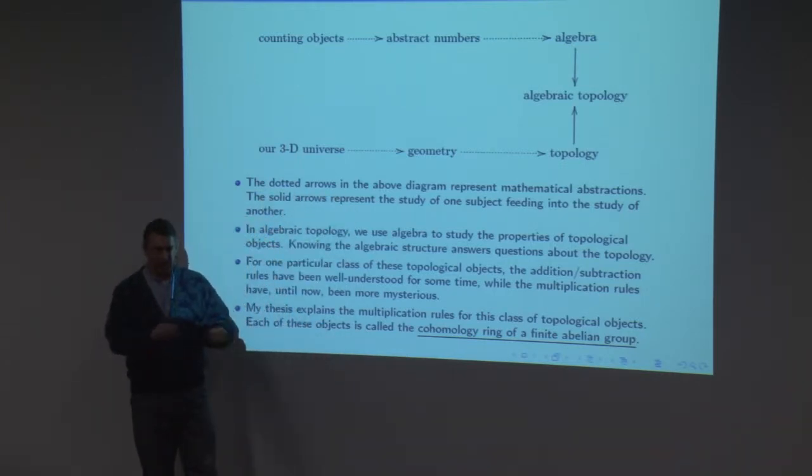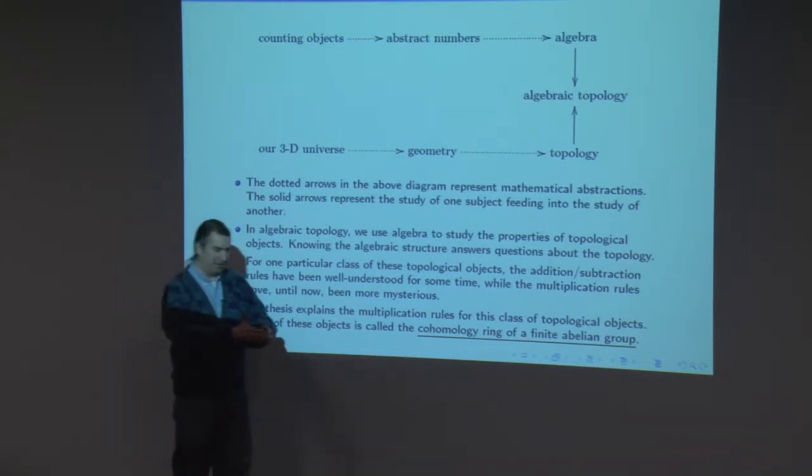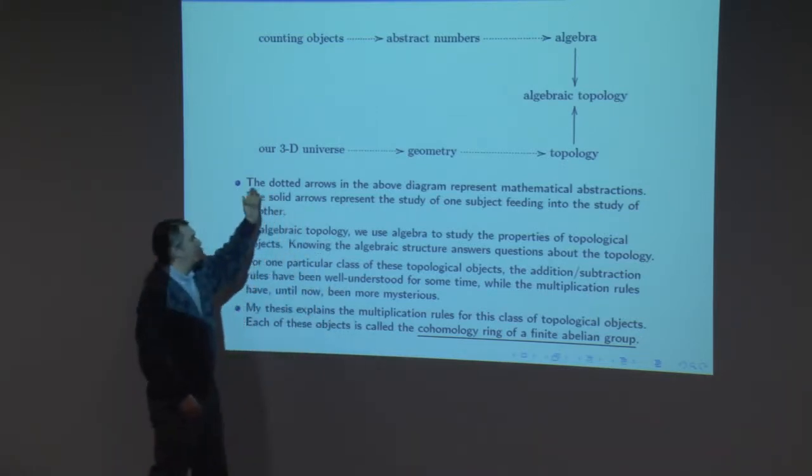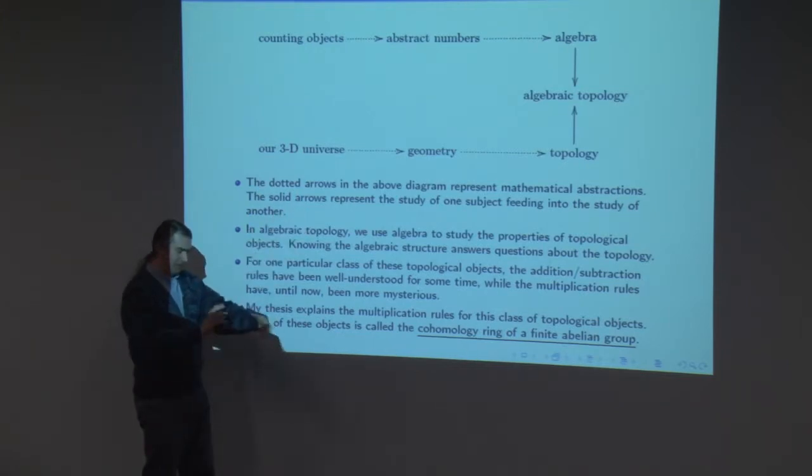We take objects and we sort of reduce them to points. We take paths things take and we reduce them to curves. So we take our physical objects and we abstract them down to these very atomic little geometric things.